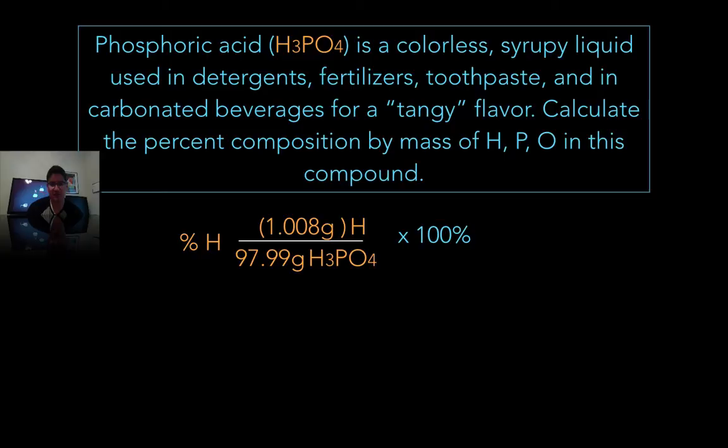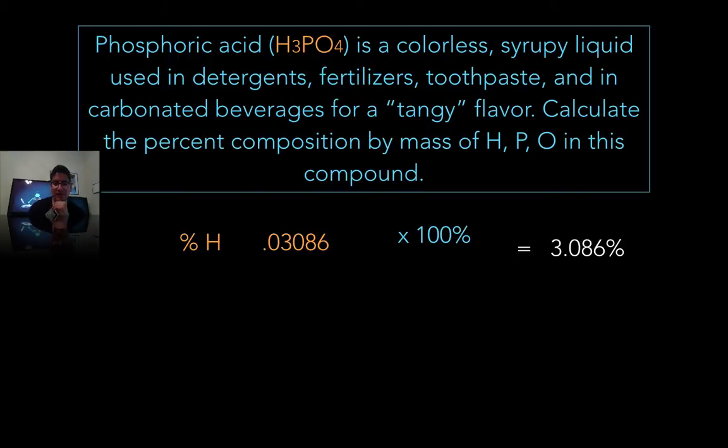So my part, here's my hydrogen, I have 1.008 grams and I have three of them. So it's 3.024 grams divided by 97.99 and that gives me 0.03086, and of course I multiply that by 100. So hydrogen contributes 3.086 percent of the mass. So that's not a lot. That means 97% of the total mass comes from phosphorus and oxygen.